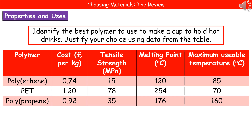The only real option is polypropene. Even without looking at the other column headings, you've eliminated two out of three choices from just that one column. The melting point is an irrelevance because we're not putting drinks over 100 degrees in a cup. Tensile strength could be useful — when thinking about squeezing the cup, yes, that is important. And cost matters too — you don't want something ridiculously expensive. But you can justify your answer quite easily using the maximum usable temperature, then back it up with a couple of the others.